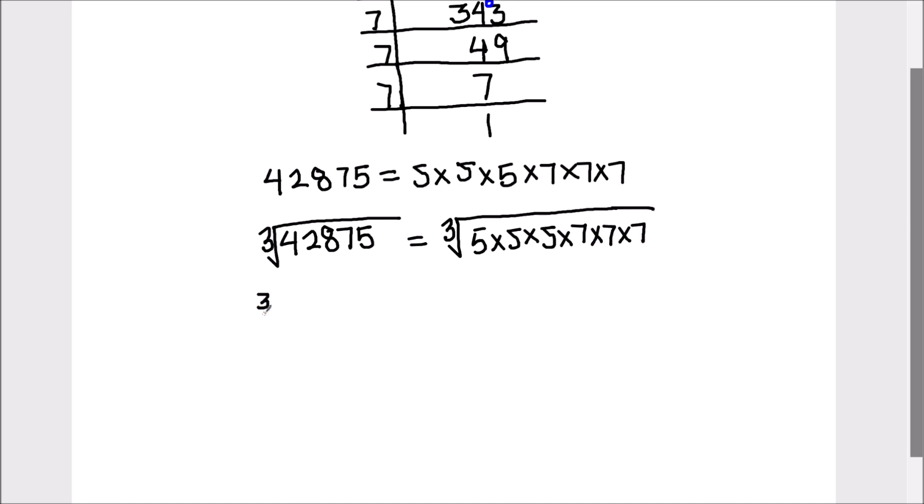Let's simplify this. Cube root of 42,875 equals cube root of 5 times 5 times 5 is 5 cube, and 7 times 7 times 7 is 7 cube.